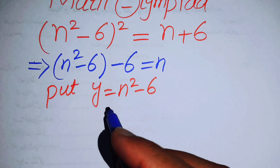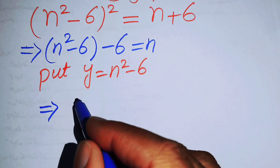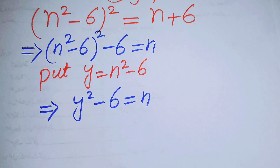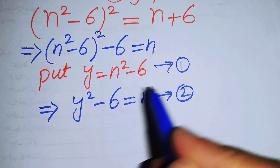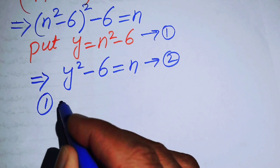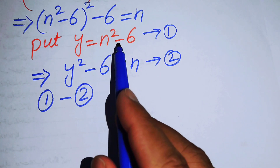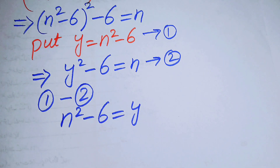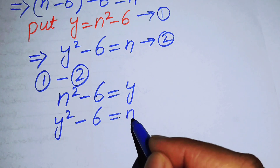When we put y = n² - 6, this equation becomes y² - 6 = n. I will name this equation number 1, and this equation number 2. So equation 1 is n² - 6 = y, and equation 2 is y² - 6 = n.